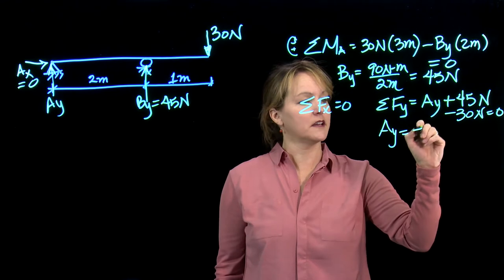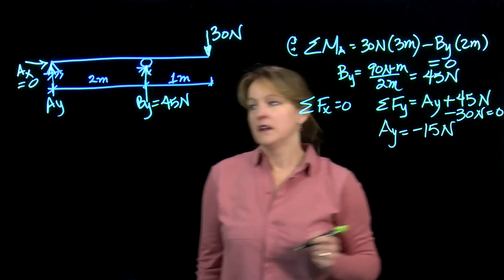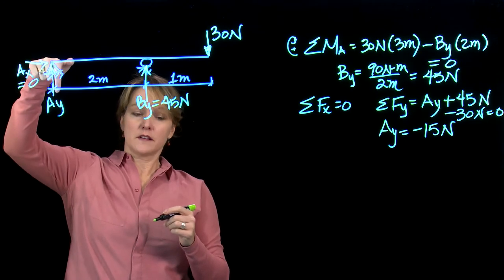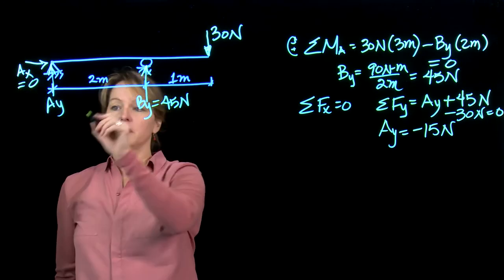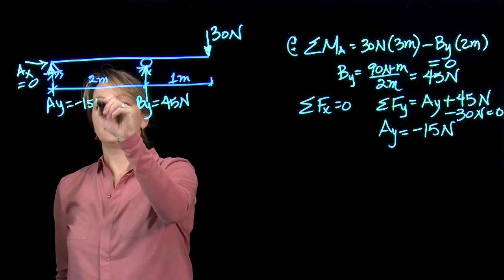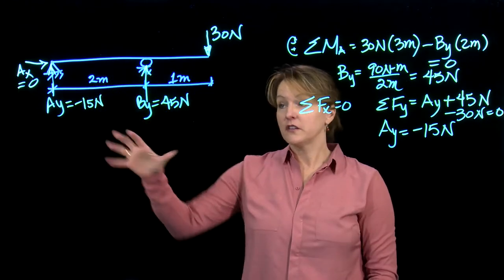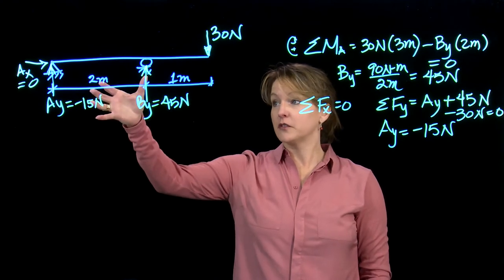AY equals minus 15. The minus just means that this actually has to be a downward force. So this support at this location has to be able to hold it down as I try to push on the right side. This is minus 15 newtons.